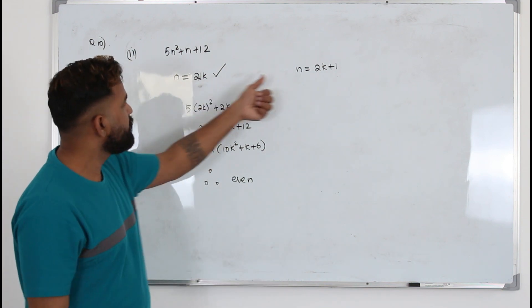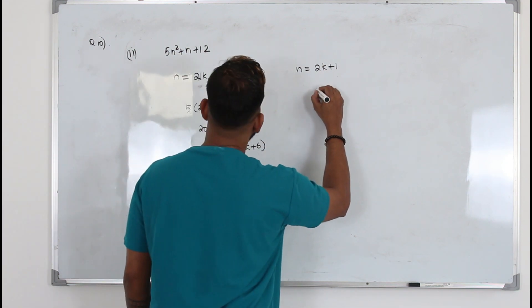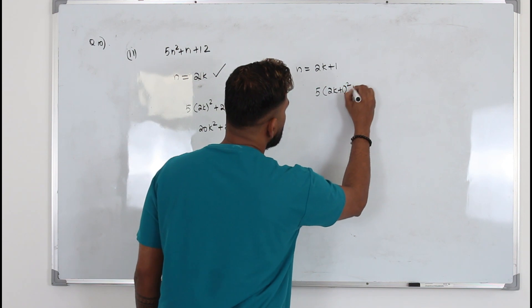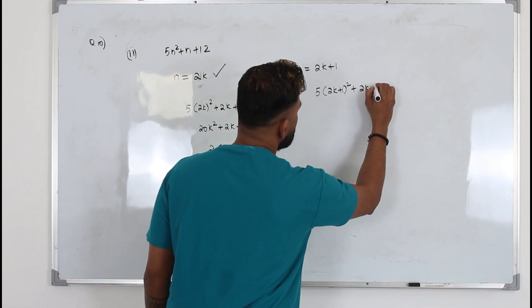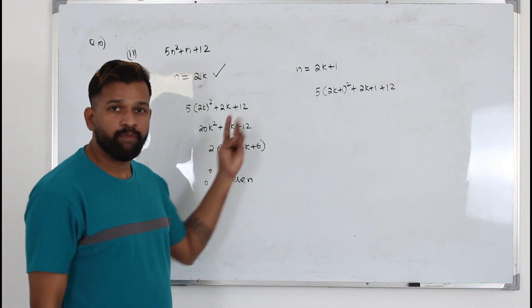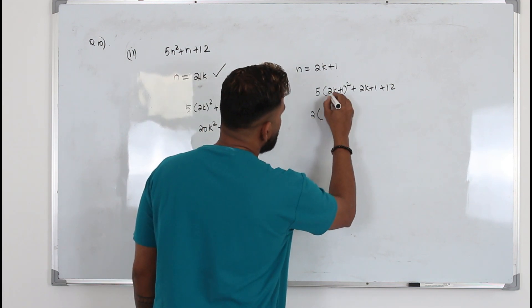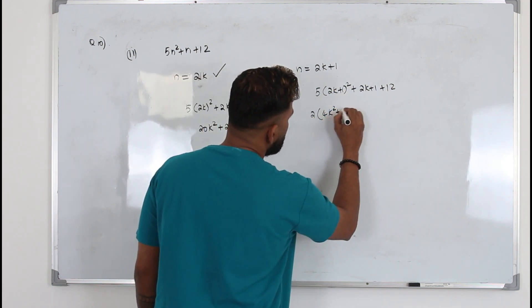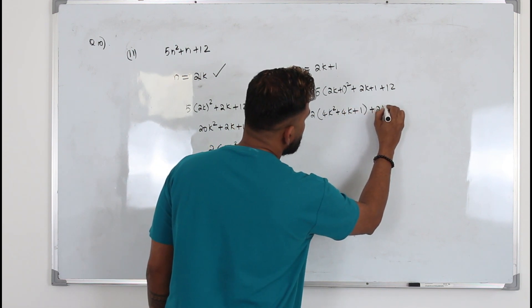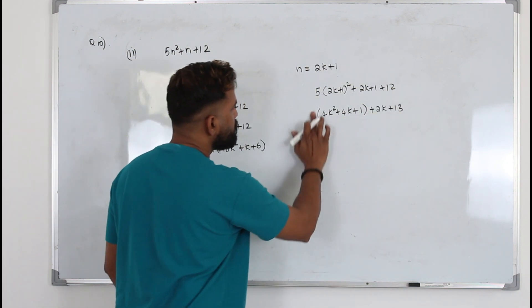We have proved it for this case. Now, what if the integer is an odd number? You put 2k plus 1 here in the place of n: 5 times (2k plus 1) squared plus (2k plus 1) plus 12. Expand it and try to write it in this form, 2 times something.